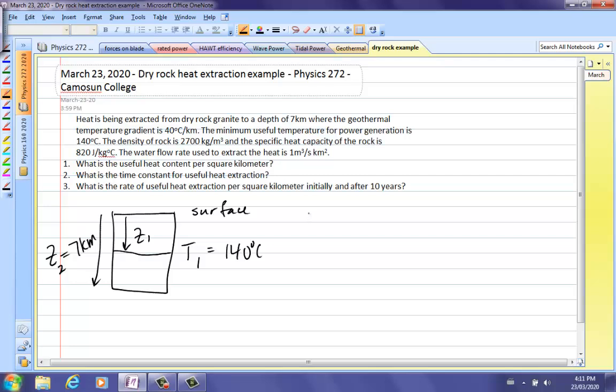Since we know the temperature gradient G is 40 degrees Celsius per kilometer, then we know that the change in temperature is equal to that gradient times the change in depth. So it doesn't matter what the surface is, but from the T1 up to the surface will be our delta T. So that's 140 is equal to 40, and then our delta Z is what we need.